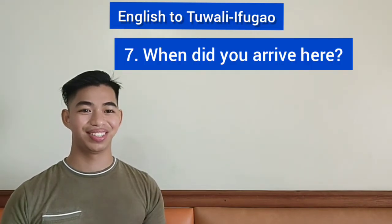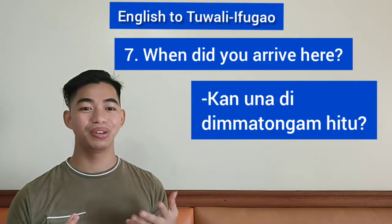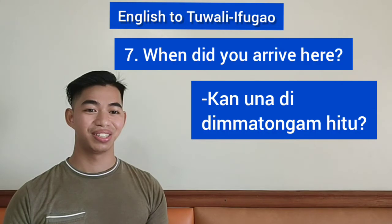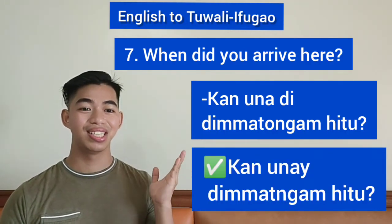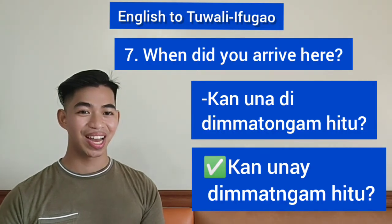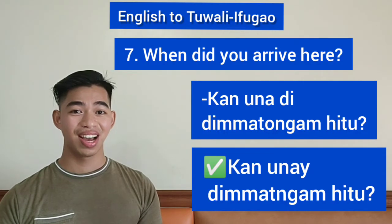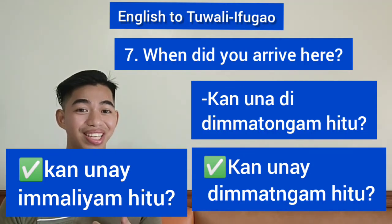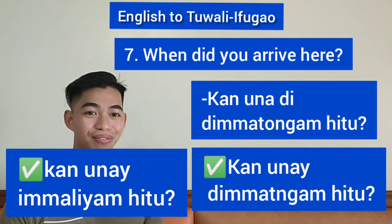Question number seven: When did you arrive here? This is asking about the past. We say 'kan unay di dumatongam itu'. You can also say 'kan unay di dumatongam' — you can choose whichever you are more comfortable using.